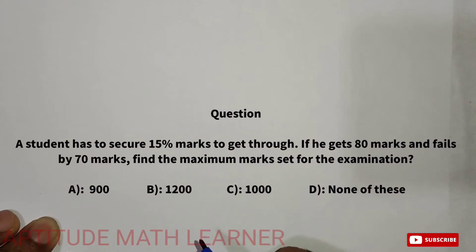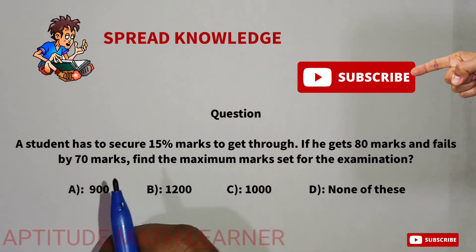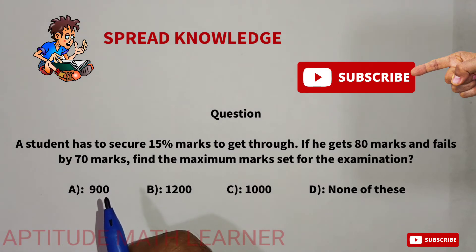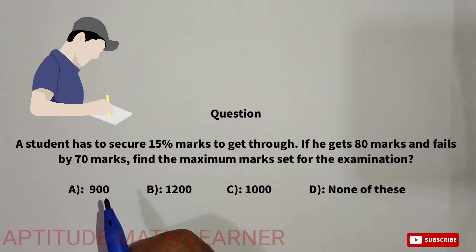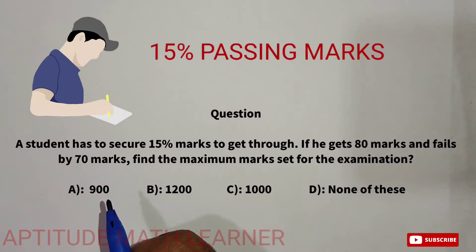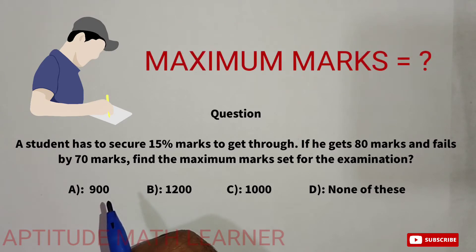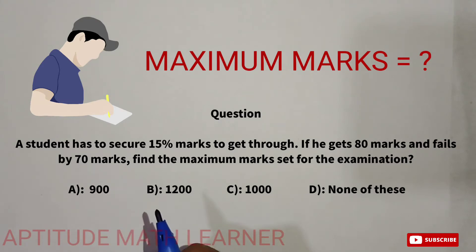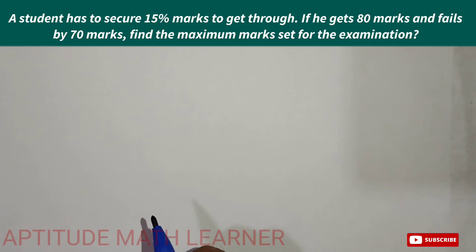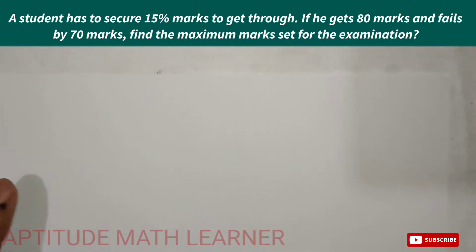Welcome to the YouTube channel Aptitude Math Learner. Today's question: a student has to secure 15 percent marks to get through. If he gets 80 marks and fails by 70 marks, find the maximum marks set for the examination. We have to find out the total marks of the examination, so we take the maximum marks as x.